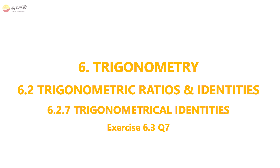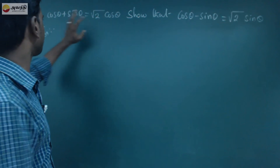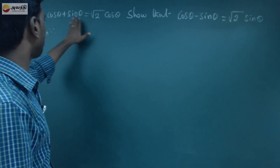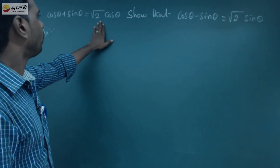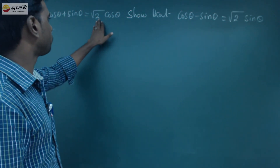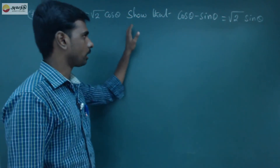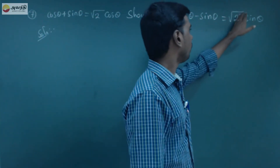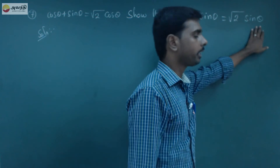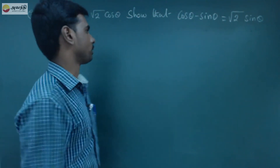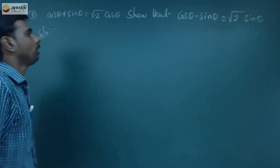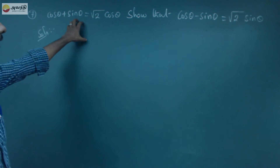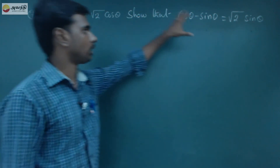In the seventh question, cosθ plus sinθ equals square root of 2 into cosθ, and cosθ minus sinθ equals root 2 sinθ. We will prove and derive this term.